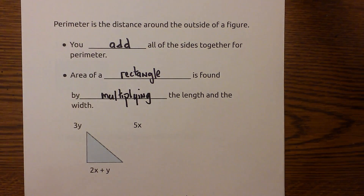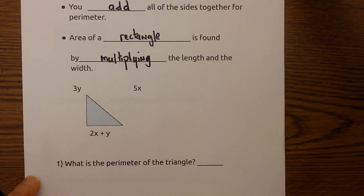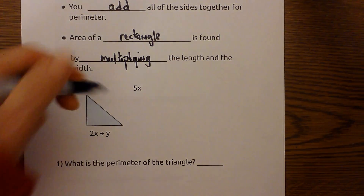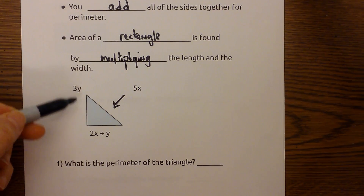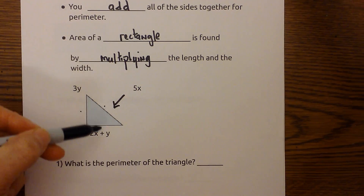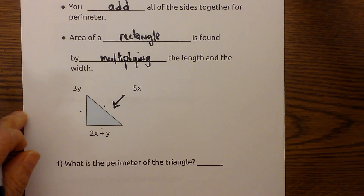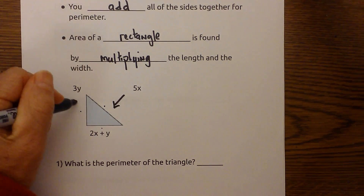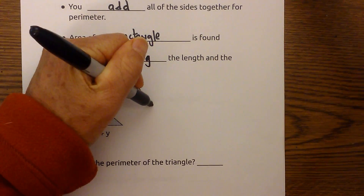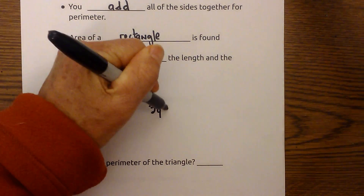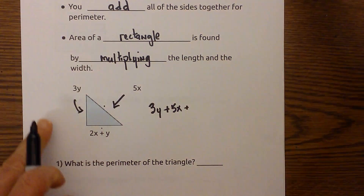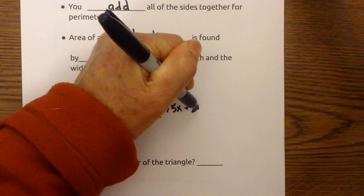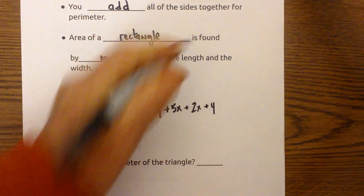So let's go ahead and work a couple of example problems. First, what is the perimeter of the triangle? I add this side plus this side plus the third side. So let me go ahead and add 3y plus 5x plus 2x plus y.